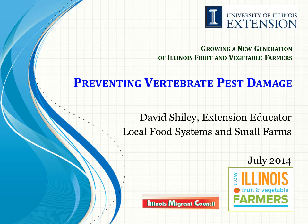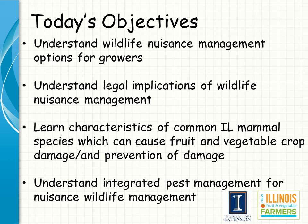Hello, today I'll be talking about preventing and reducing vertebrate pest damage to fruits and vegetable crops. Damage caused to crops by birds and mammals can lead to reduced yields and reduction of crop quality. This presentation will present management options and strategies to reduce this type of damage.